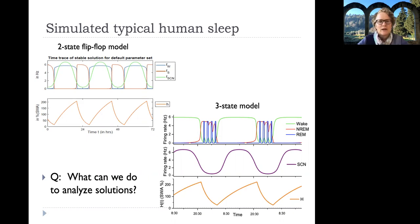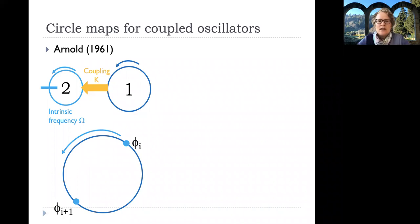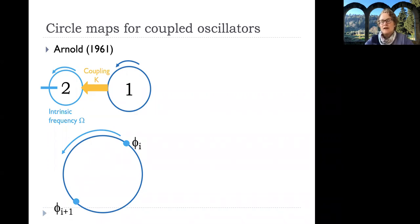To analyze these solutions, we decided to look at the classic idea of a circle map, first introduced by Arnold in the 1960s, with a lot of subsequent work by Leon Glass. Circle maps have been used as a tool to analyze the response of two coupled oscillators, where one oscillator drives the other and they may have different frequencies.